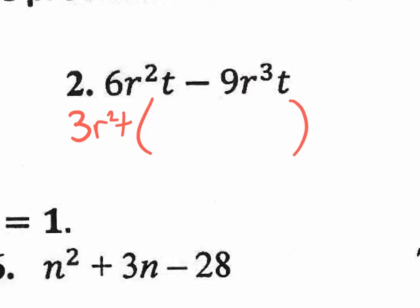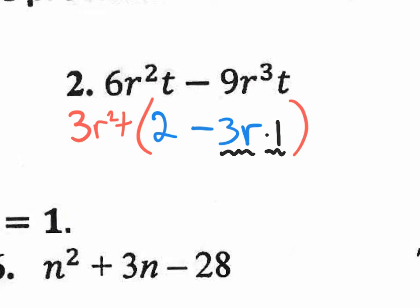Our GCF is 3R²T. So 3R²T times what will get us 6R²T? 3 times 2 will get us 6, and the R²T is already there. For the next term, 3 times what gets us minus 9? That would be minus 3. R² times what will get us R³? I need an R right here. And T times what gets us T? T times 1 — you don't even have to put the 1. And that's your factored form.